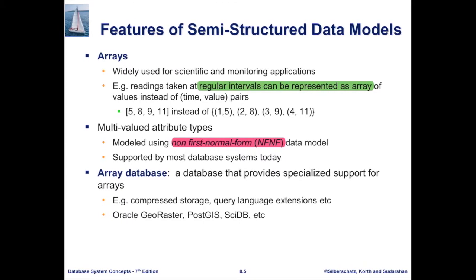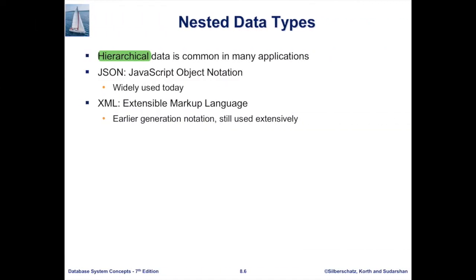With respect to the type of data, there are more appropriate databases — that's one of the key takeaways. For nested data types, the form of data is hierarchical or tree-like. JSON and XML are both examples of a hierarchical data type.